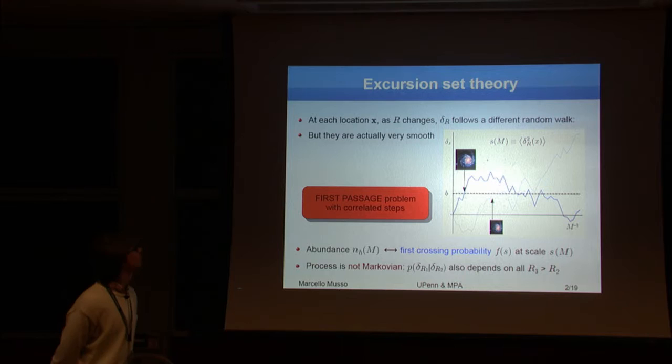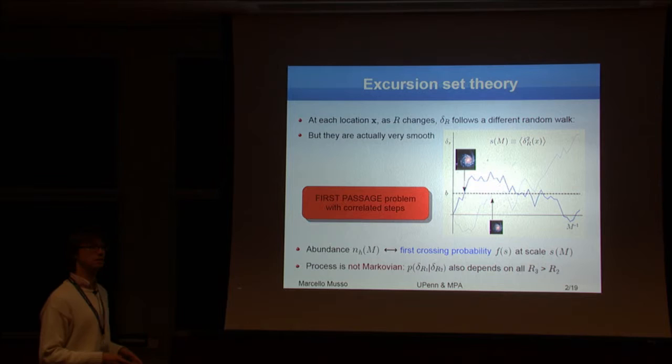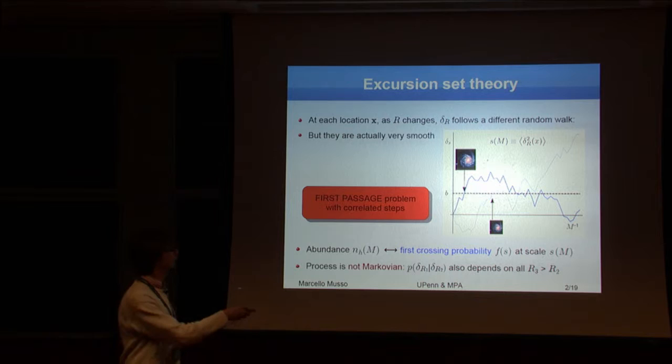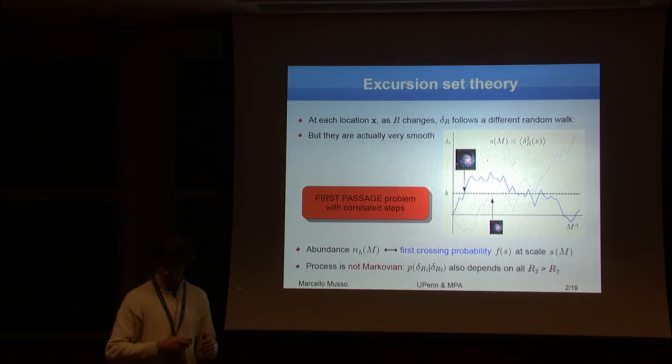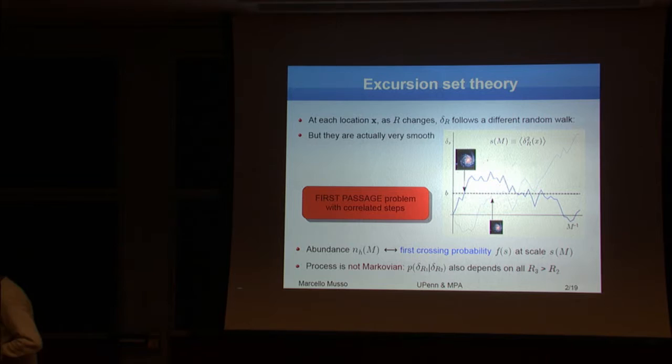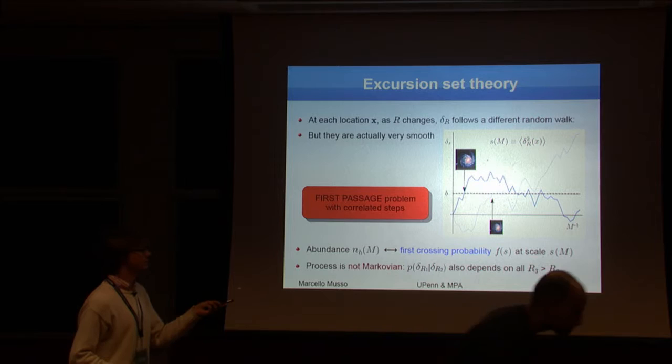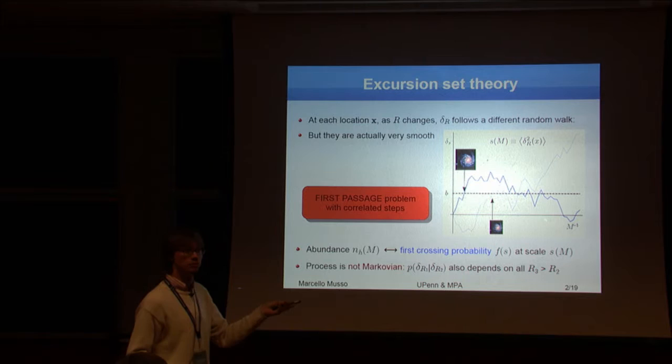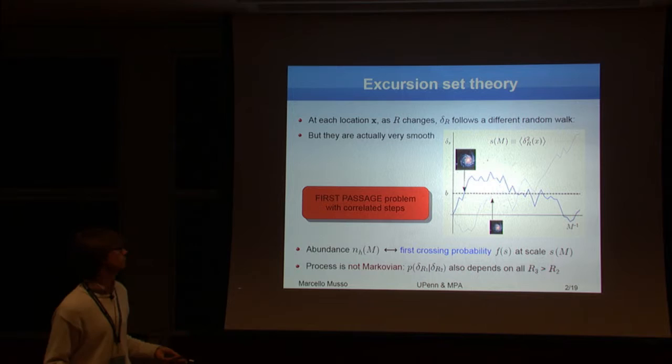So when we do excursion set, what we have in mind is that we sit at a place that we think may become a halo, and then we smooth the density field over many conceptual spheres around that position. This gives, as the smoothing scale changes, a trajectory for Delta. Since what you're after is when this trajectory crosses some threshold, the scale for which it crosses gives you the mass of the halo.